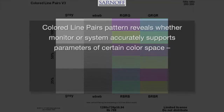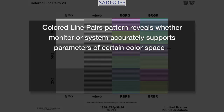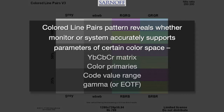The Colored Line Pairs Test Pattern reveals whether a monitor or system accurately supports the parameters of a certain color space, including YCBCR matrix, color primaries, code value range, and gamma or EOTF.